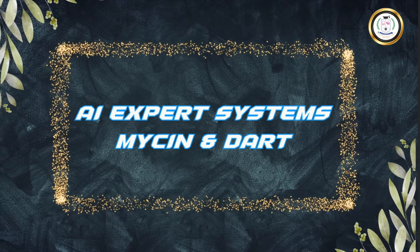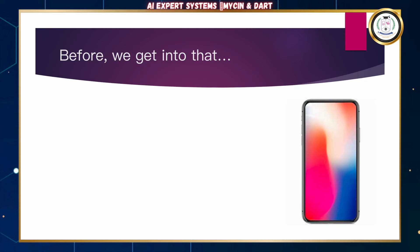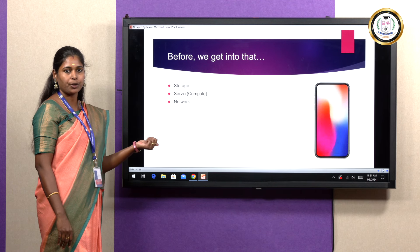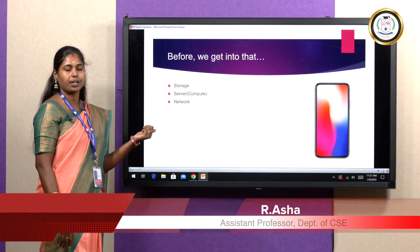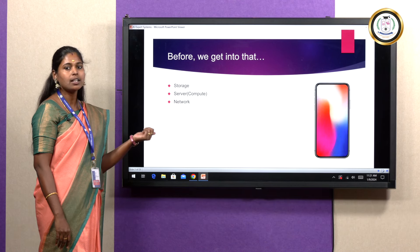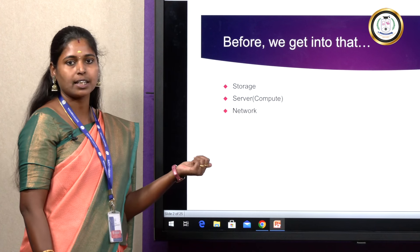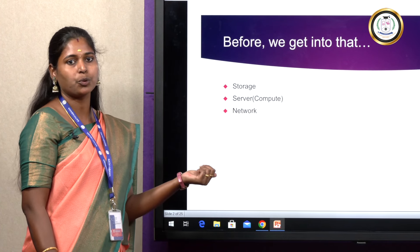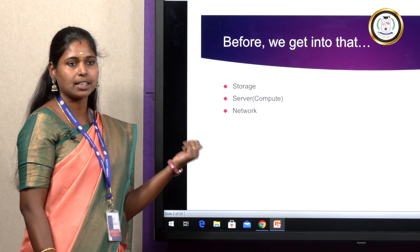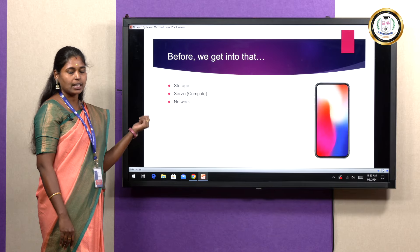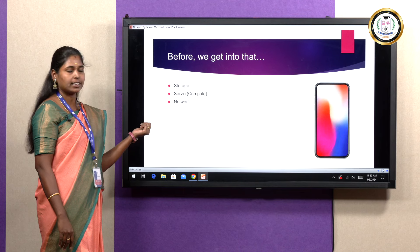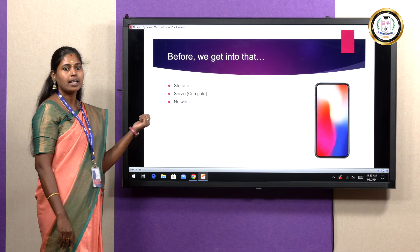Before getting into that, we have to know about what is storage, what is server, and what is network. Storage plays an important role when we go for process input and output. Storage plays a major role in whatever functionality we are doing on the expert system. Server is nothing but where we compute — whatever process we are doing, everything will be handled by the server. Network is like the platform on which we are going to do the process. These are the three major factors in our expert system.